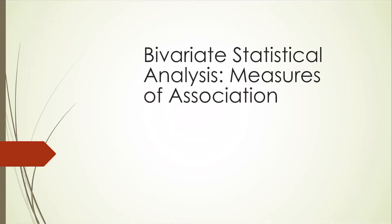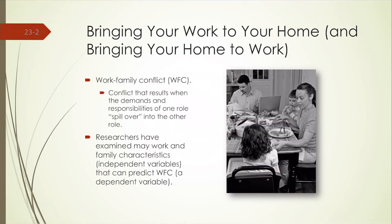Today we're going to be in chapter 23, which discusses bivariate statistical analysis — what we can call measures of association. The one I'm going to talk about primarily from this chapter is the correlation coefficient, and specifically the Pearson R. In the beginning of your chapter, there's a vignette about bringing work home. How does the relationship between work and home life correlate? Some people would say there's no correlation at all. Let me talk about correlations first before we begin.